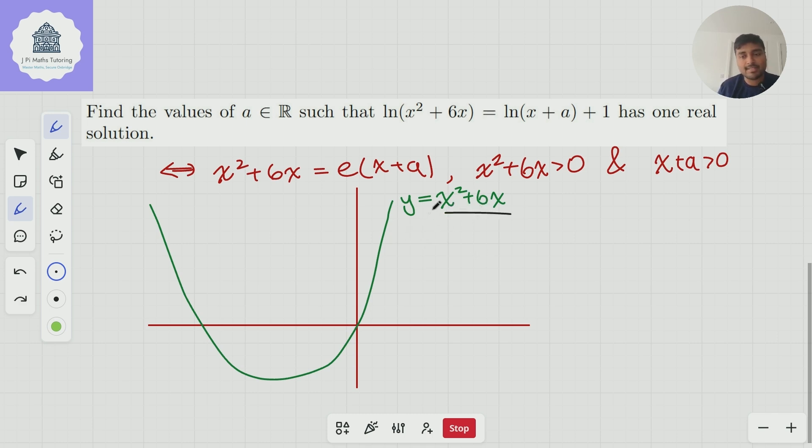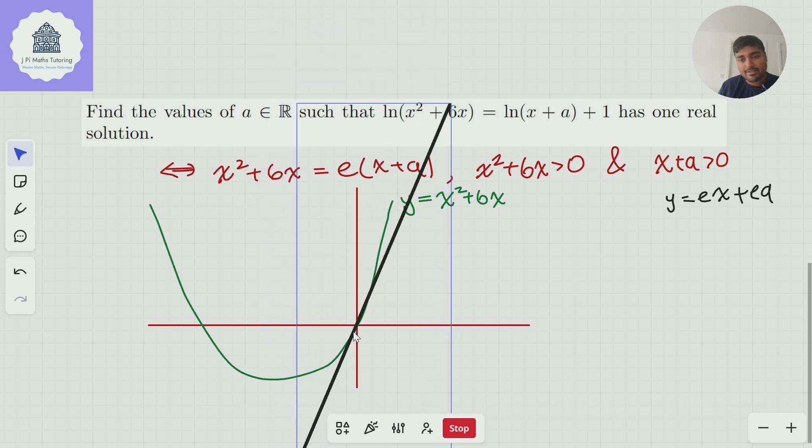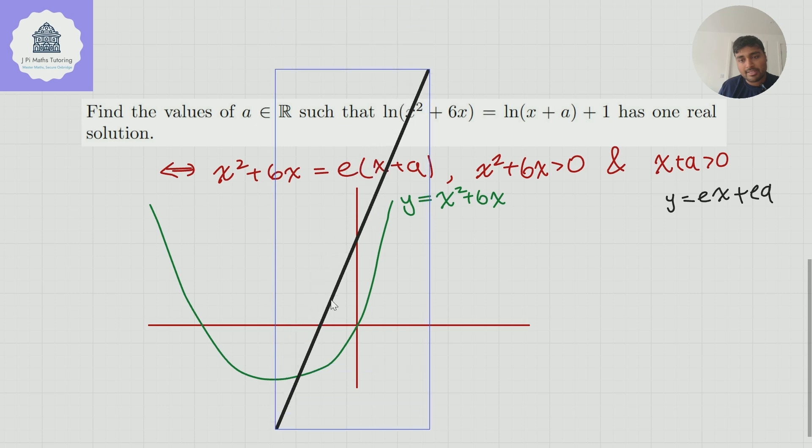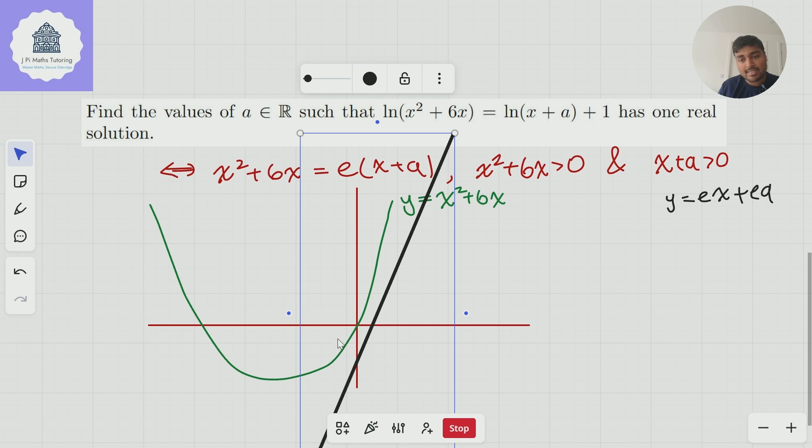Notice at the origin, and this will become important in a moment, at the origin the gradient of this parabola is 6. So the derivative of this is 2x + 6. Sub in x = 0 it gets 6. So therefore this straight line ex + a is obviously a straight line with gradient e. The idea is this line has constant gradient e and a is just going to vary the y intercept. So if a is 0 it's going to pass through the origin there. And if I increase a it's going to move up like this. And if I bring a down it's going to move down like so. But as I said a second ago the gradient of the parabola at the origin is 6. And so this is e, e is smaller than 6.